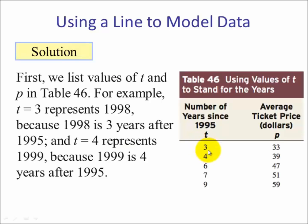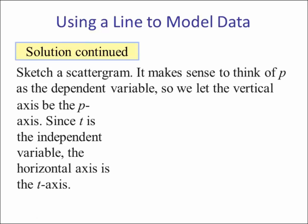t equals 3 would mean three years after 1995, which is 1998. t equals 4 would be 1999. 6 would be 2001. We'll sketch the scattergram. p is our dependent variable, so it's going to be the vertical axis, and t is the independent variable, and that's going to be our horizontal axis.